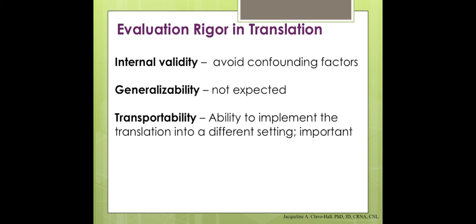Generalizability is the expectation that you'll apply the same intervention to another setting or a different population — for example, taking your handwashing intervention from the ICU and seeing how it works in the med-surg unit, a different setting, a different population. And if you go down two more sentences, it says generalizability is not expected in translational research. In other types of research they do ask whether you can apply this intervention to another setting or population, but in translational research, generalizability is not expected.